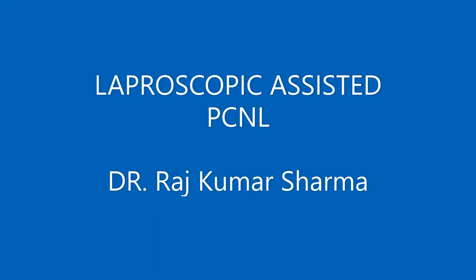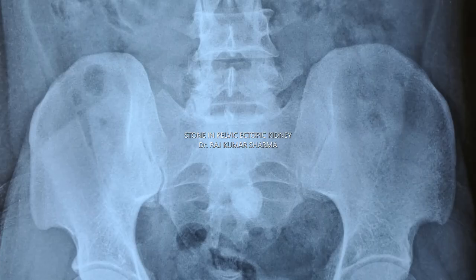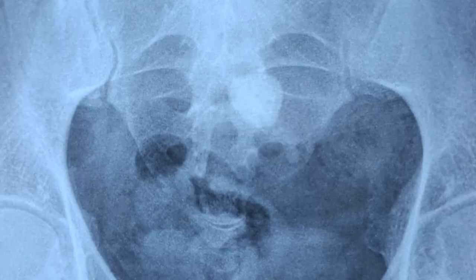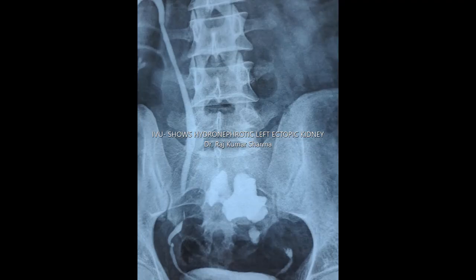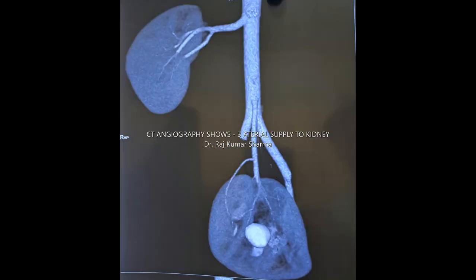This is a case of laparoscopic assisted PCNL where the stone is located in an ectopic left pelvic kidney. This is the IVP. This is CT angiography where three arterial supplies were found to this kidney.